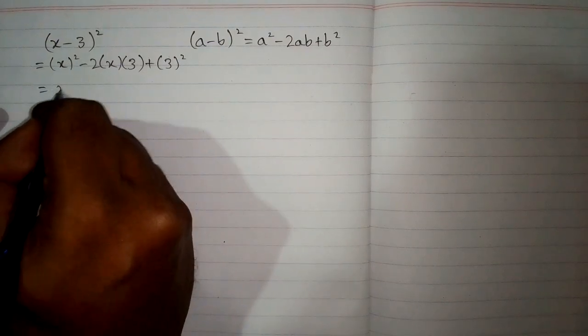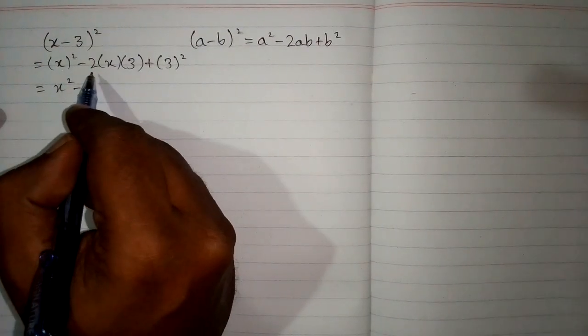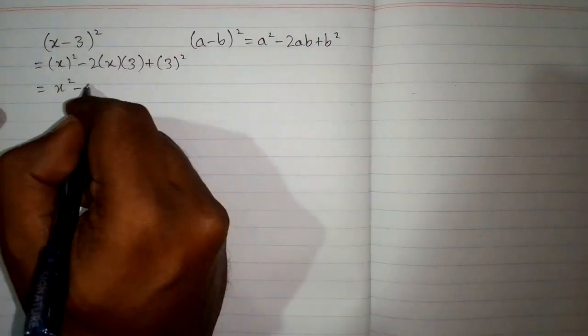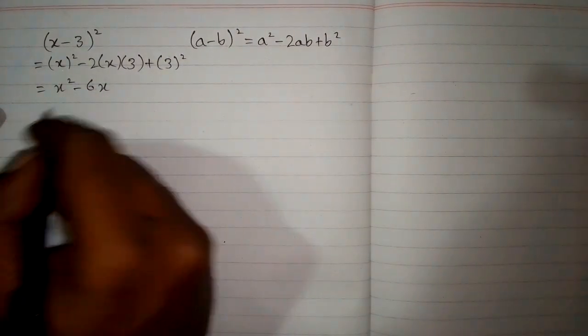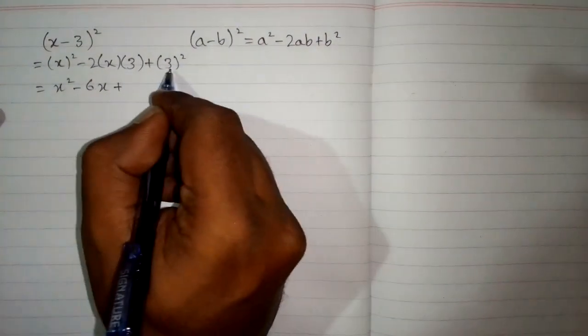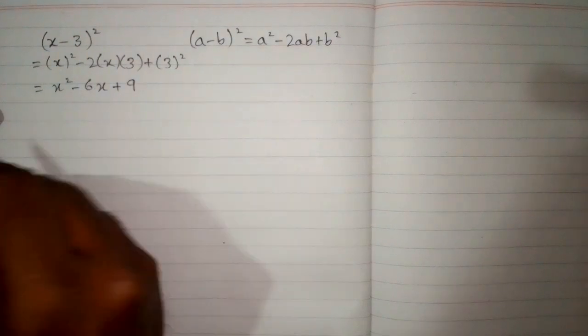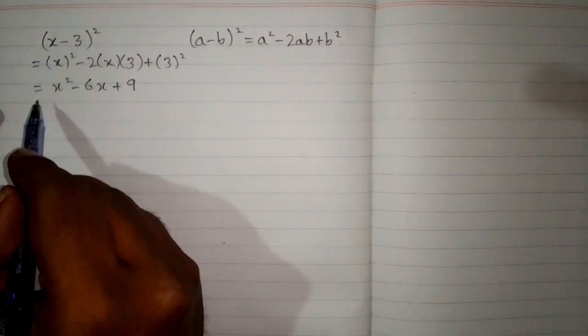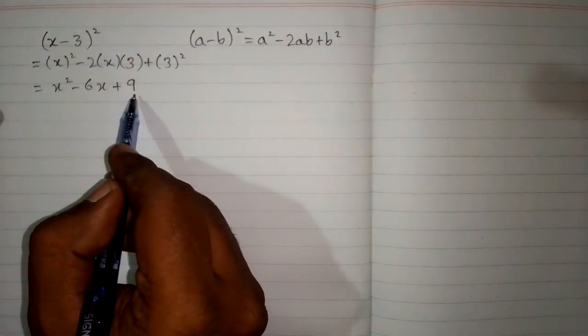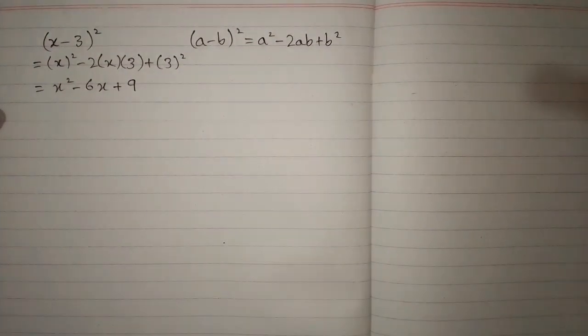Now the square of x is x square and minus 2 times x times 3 is minus 6x and then plus square of 3 is 9. So x minus 3 whole square equals x square minus 6x plus 9. And this is the answer.